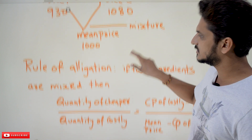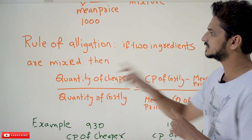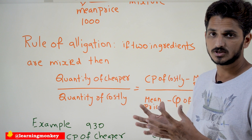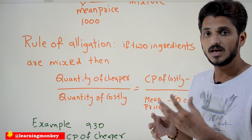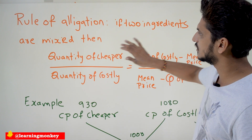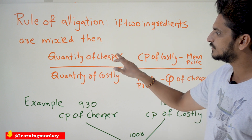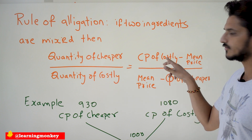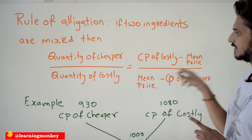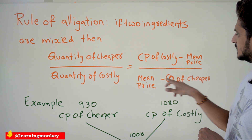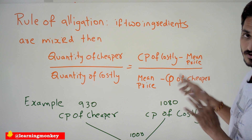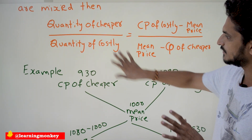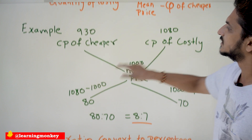The rule of allegation says: if two ingredients are mixed, apply this rule to identify the ratio. The formula is: Quantity of cheaper / Quantity of costly = (Cost price of costly − Mean price) / (Mean price − Cost price of cheaper). Applying this formula gives you the ratio at which the two ingredients should be mixed.